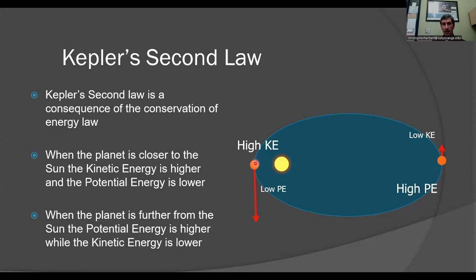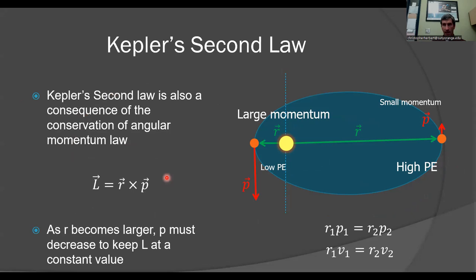Higher kinetic energy, low potential energy here, high potential energy here, low kinetic energy here. If we define our angular momentum as L is equal to R cross P, R is our position vector with respect to the sun, P is the momentum. We know that P is M times V. The mass isn't going to change of the planet, so the only thing that can change to change the momentum is of course the velocity.